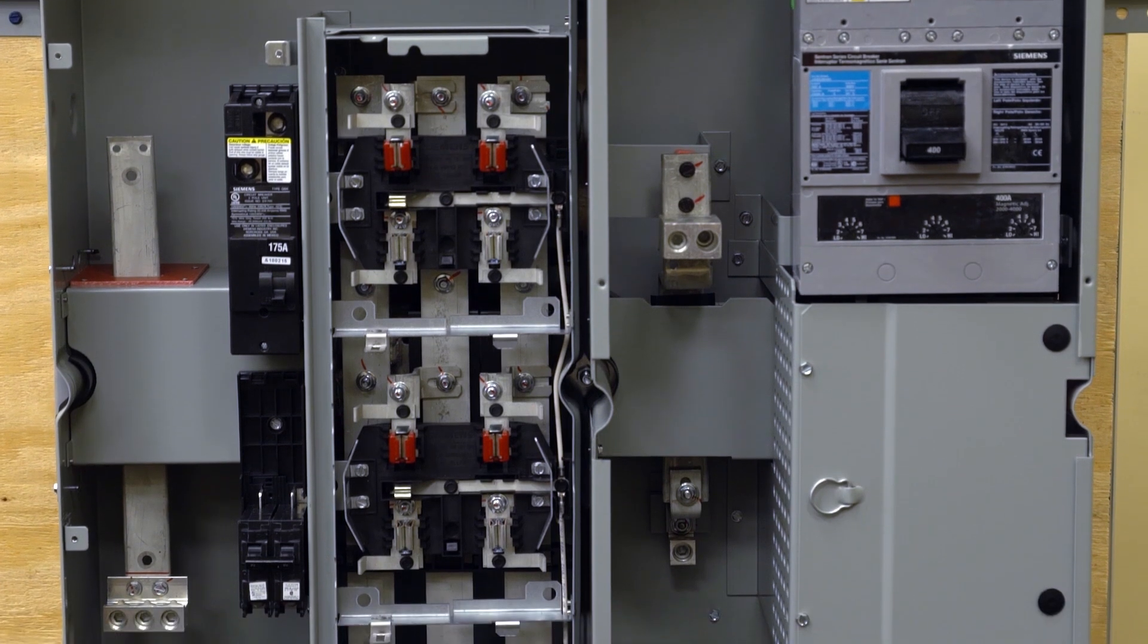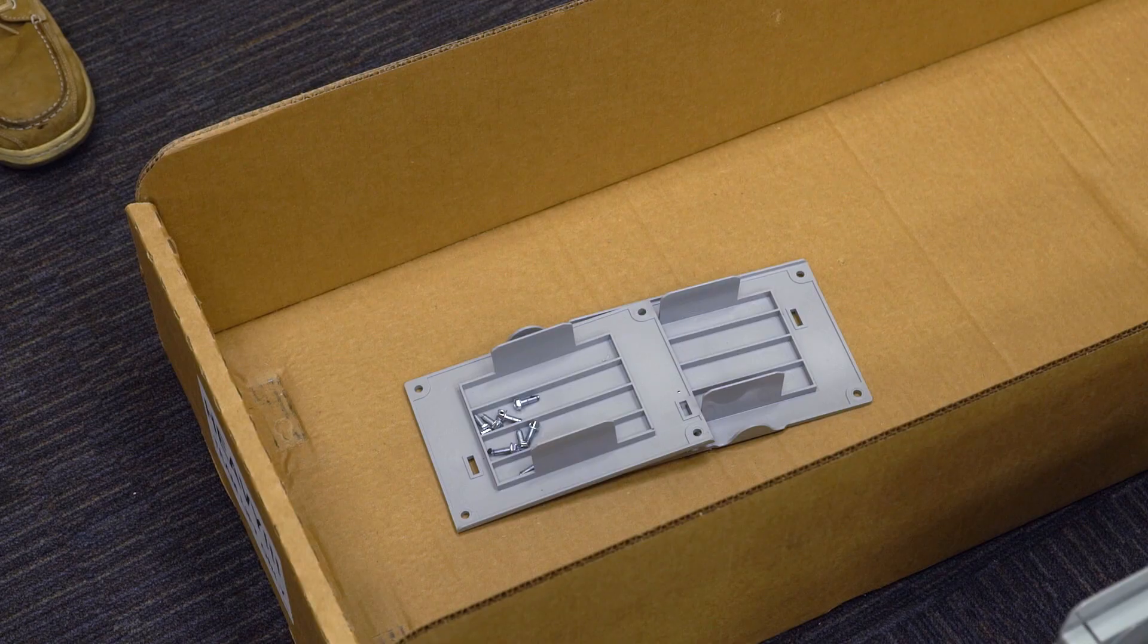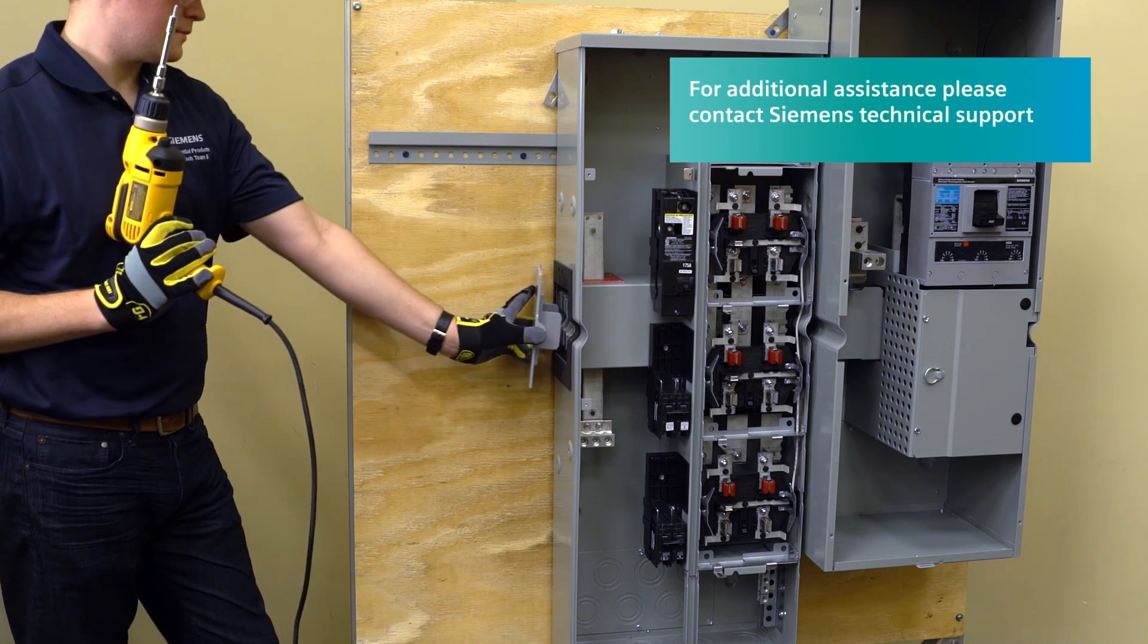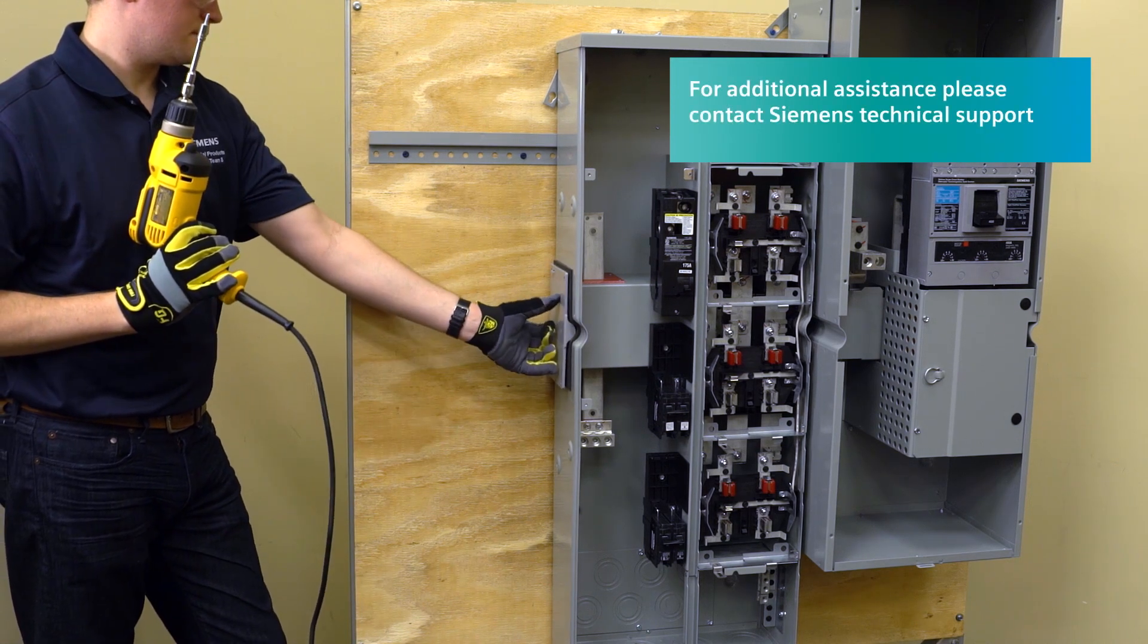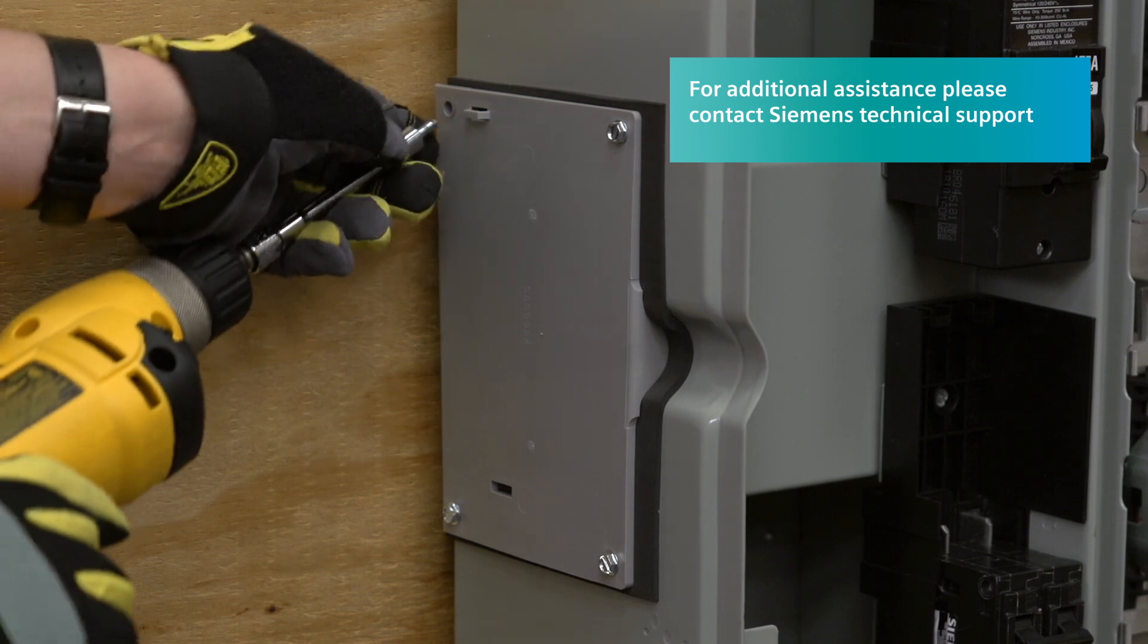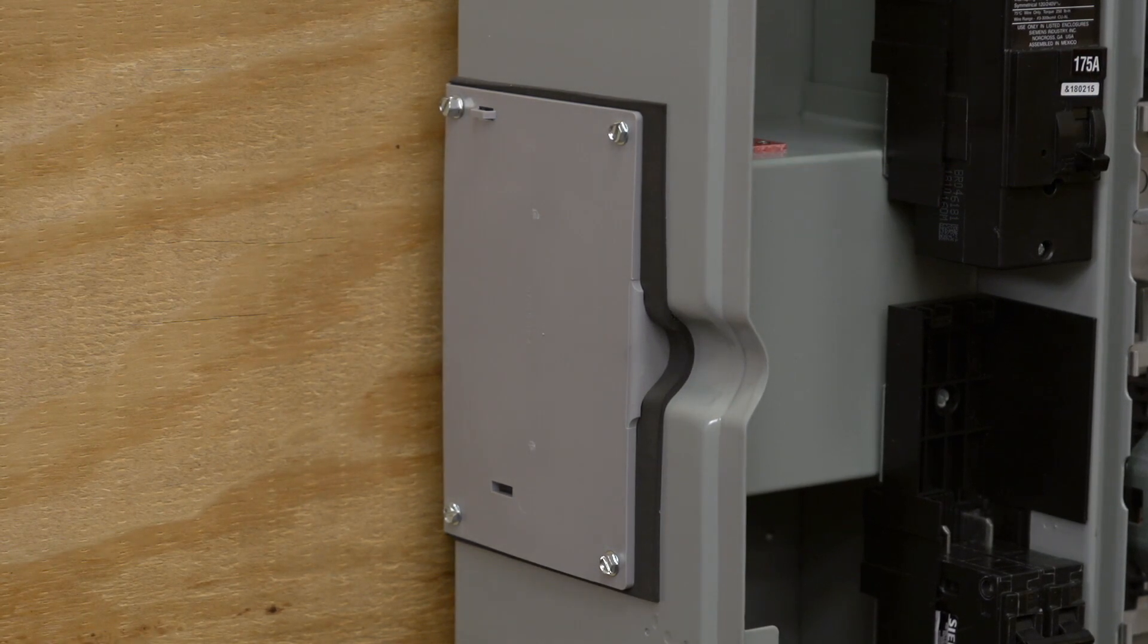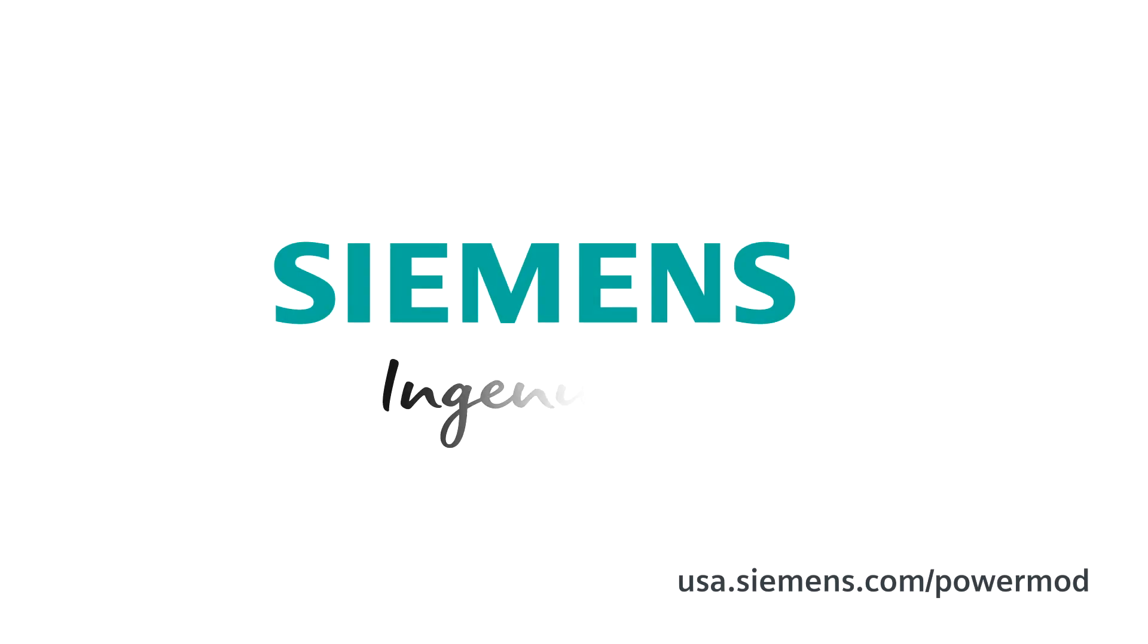Once all of the modules are mounted and connected to one another on the wall, retrieve the WMEP plates from earlier and install them over the exposed busing on the ends of the lineup. Be sure to install the sealing screw closest to the locking loop on the plate. Siemens, ingenuity for life.